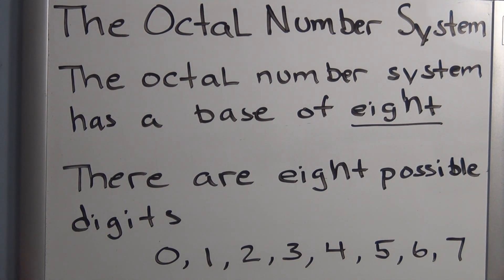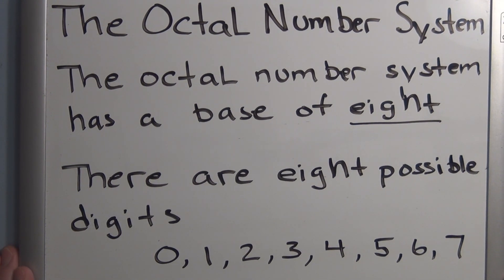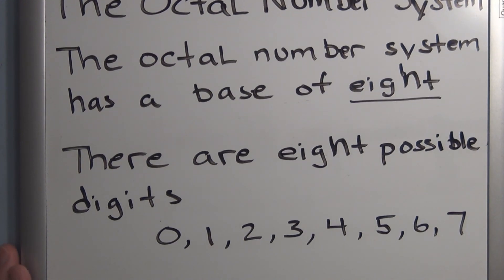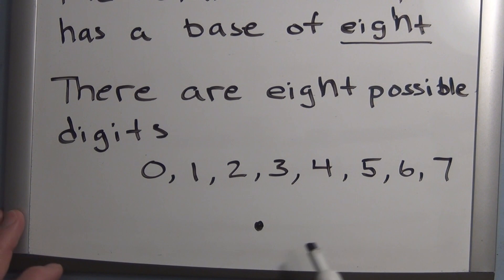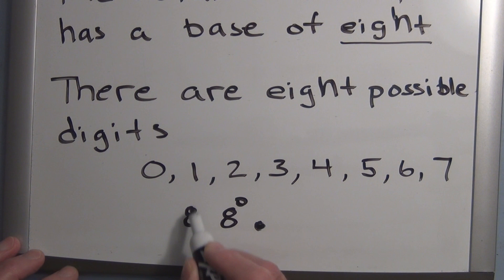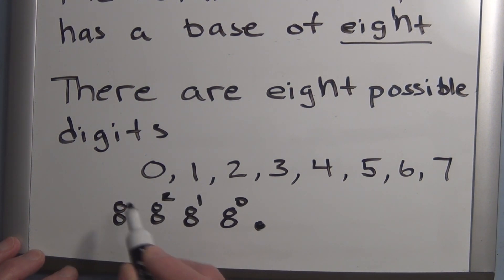And similar to the binary and decimal number system, the octal number system is a weighted system, meaning the position of each digit with respect to the octal point will be weighted. So if this is the octal point, and we go to the right, this will be eight to the zero, eight to the one, eight to the two, eight to the three and eight to the four and so on for the weights.